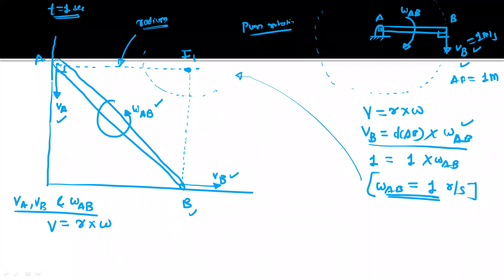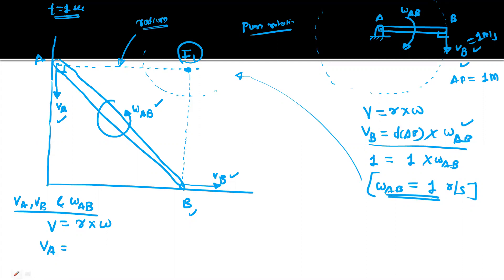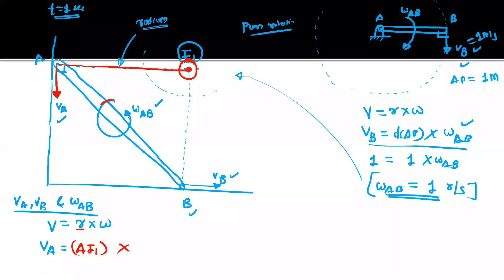Consider the velocity for point A, so it becomes VA. With I1 as the center of rotation, VB becomes the tangential or linear velocity. Similarly, VA is the linear velocity at point A, with AI1 as the radius, so the relation is VA = AI1 × Omega_AB, where Omega_AB is the angular velocity of the complete rod AB performing general plane motion.